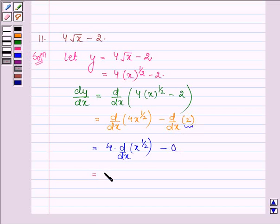So this is further equal to 4 × (1/2) × x^(-1/2), since the derivative of x^n is n × x^(n-1).